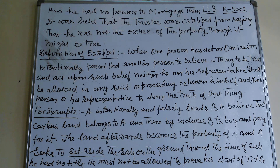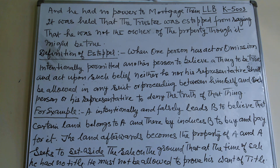Now the definition of Estoppel: when one person has by act or omission intentionally permitted another person to believe a thing to be true and act upon such belief, neither he nor his representative shall be allowed in any suit or proceedings between himself and such person or his representative to deny the truth of that thing.